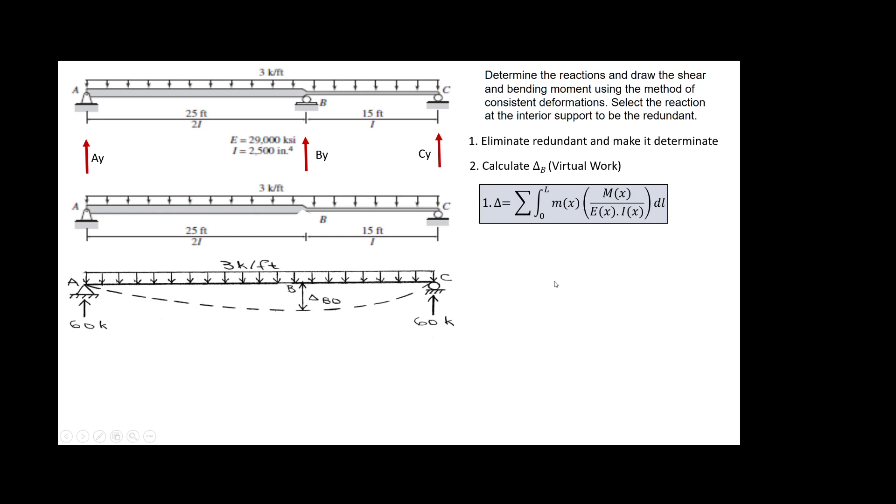For this particular type of beam, this is the real structure, if you want to call it like that, this one. And we have to calculate the deflection here. And this will be the virtual structure, where we basically apply a unit load in the direction that we need, opposite in this case. You can put it in the same direction, but it doesn't make any sense, because this plus this should be zero. And that's the basis of the system.